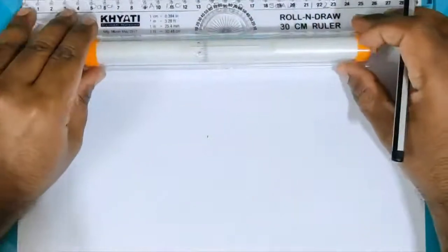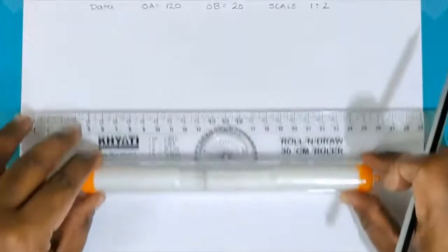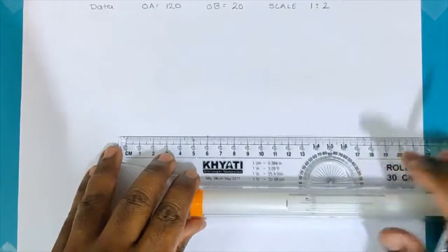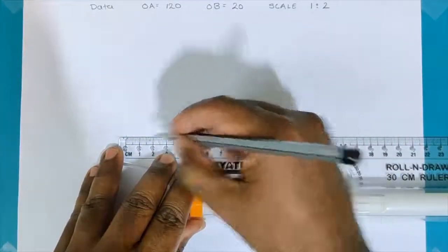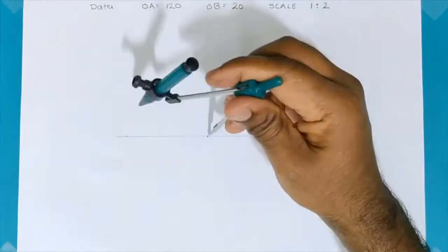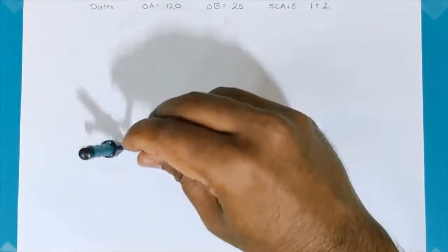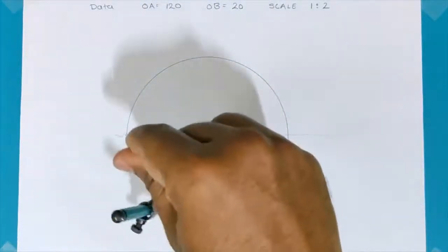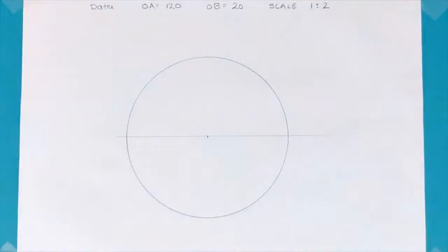These are the details that are given. I draw a horizontal line first and because I am taking a scale of 1 is to 2, that is half scale, I will be marking a distance of 12 cm and finding the center and with 60 mm as the radius I will be drawing the circle. So, I have taken half the dimension value. Instead of radii 120 I am taking radius of 60 mm.